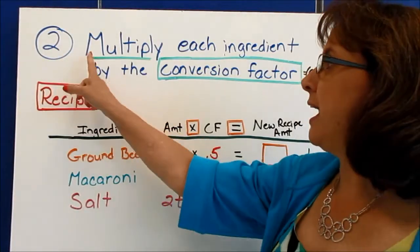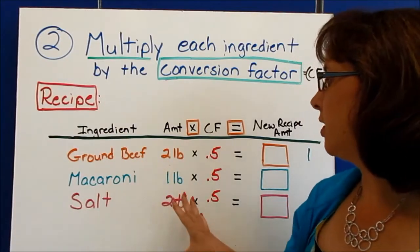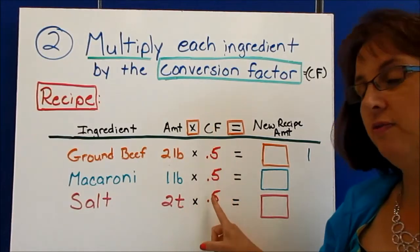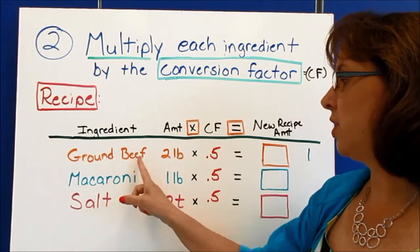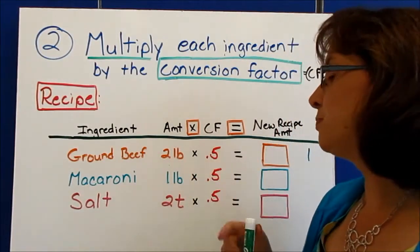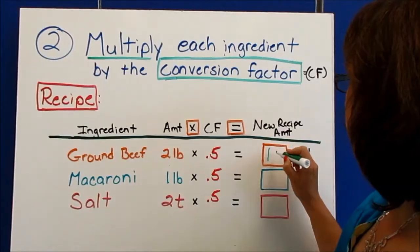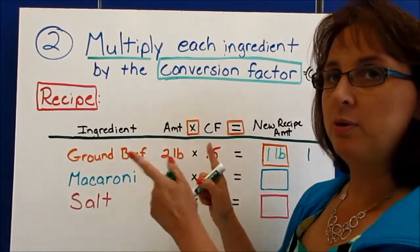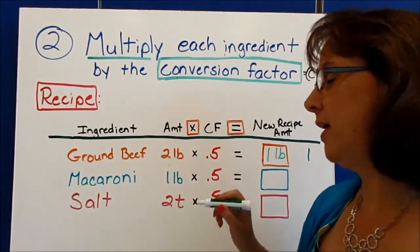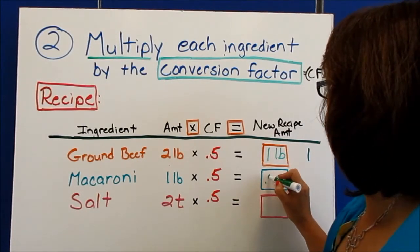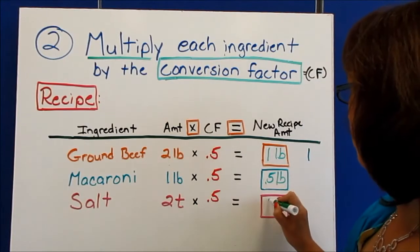The second step is that we multiply each ingredient by the conversion factor. So for our recipe I have put in 0.5 as our conversion factor. Our two pounds times 0.5 — when you put that into your calculator — you're going to get one pound. Basically when we multiply by 0.5 we're cutting our recipe in half. So one pound times 0.5 is going to be 0.5 pounds, and two teaspoons times 0.5 is going to be one teaspoon.